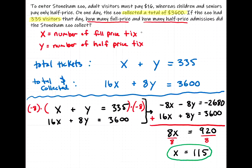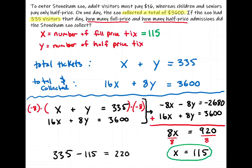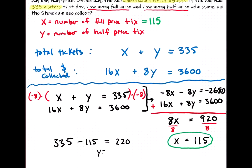So we now know that the number of full-priced tickets is 115. And we know the total number of tickets is 335. So, x plus y equals 335. Or, if you take the 335 minus the 115 tickets that we know are full-priced, so that gives us the remaining 220 tickets. So, that means y is equal to 220. So, that means there are 220 half-price tickets.